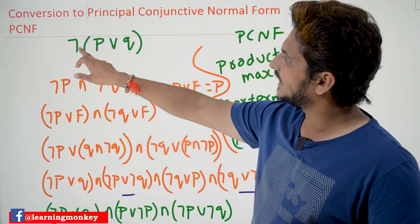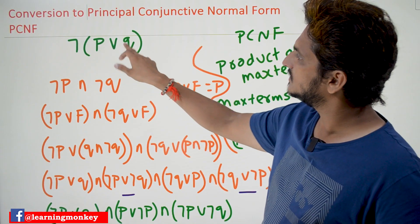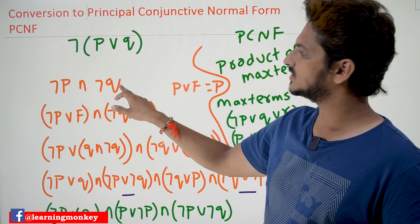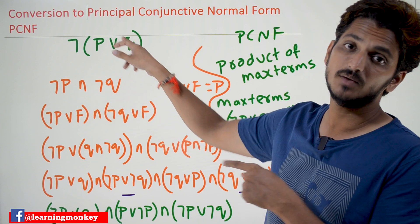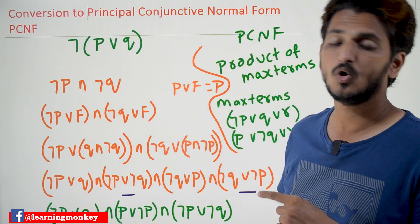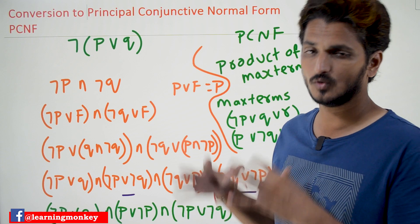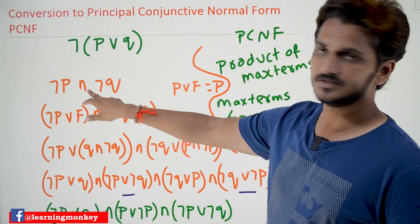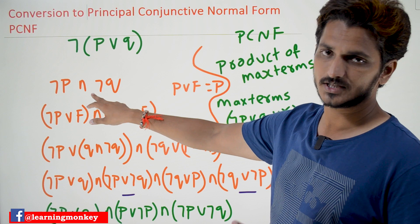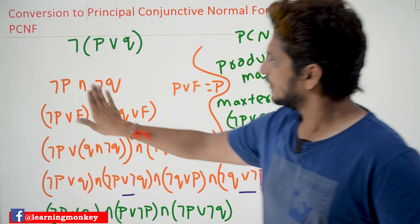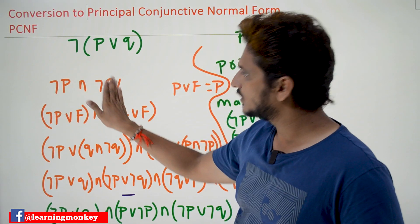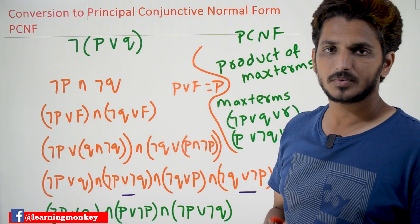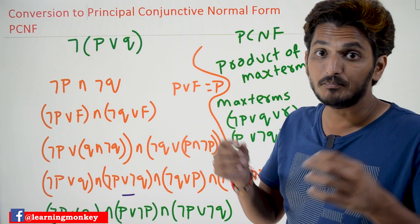So now negation of p disjunction q can be converted as negation p conjunction negation q — apply De Morgan's law. Hoping you already know these basics from our previous classes. Negation p disjunction conjunction negation q — this is a product of two terms, product of max terms.